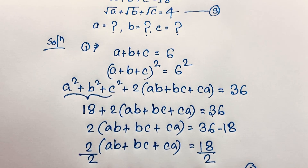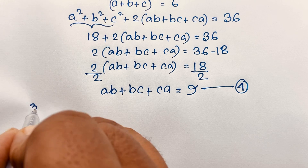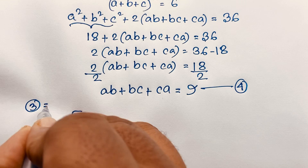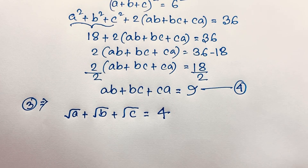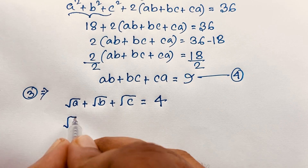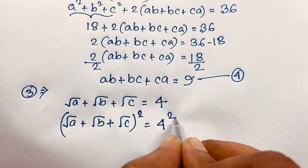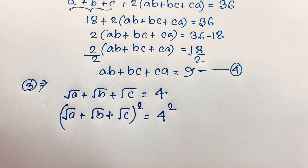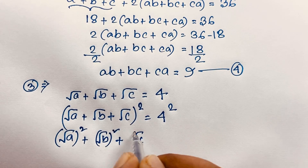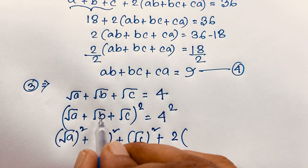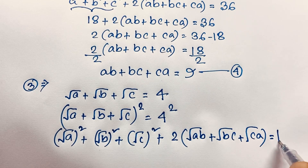Now I take our third equation, which is square root a plus square root b plus square root c is equal to 4. Again I use both sides whole square, so (√a plus √b plus √c) squared is equal to 4 squared. This expands to a plus b plus c plus 2 times (√ab plus √bc plus √ca) is equal to 16.